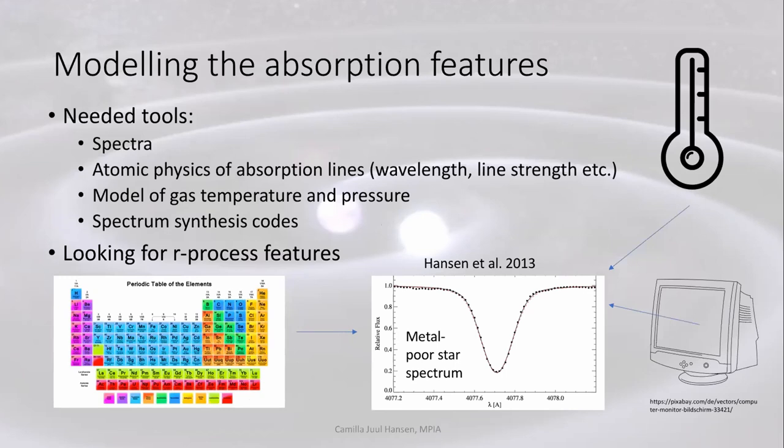In my everyday life, I work on spectroscopy of metal-poor stars, and this is one of the angles that we started out with to identify the absorption line. What we normally need are the spectra - you've clearly seen that we have those. Then in order to compute which kind of element could create this feature, we need the atomic physics as input, so we know about the wavelengths of the absorption features, the line strength, and so on. We also need a model to describe how the gas in a certain layer is behaving in terms of temperature and pressure. Then we need a spectrum synthesis code to help us compute and solve the radiative transfer.